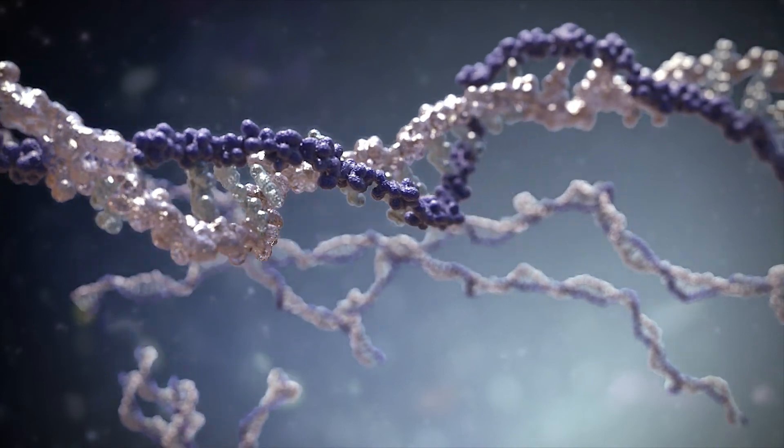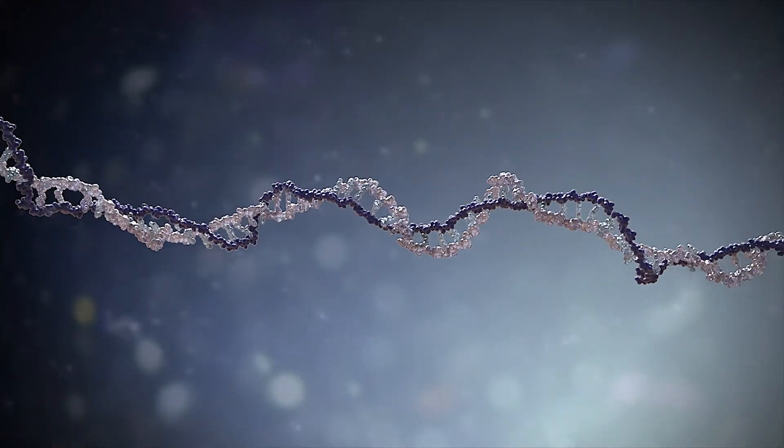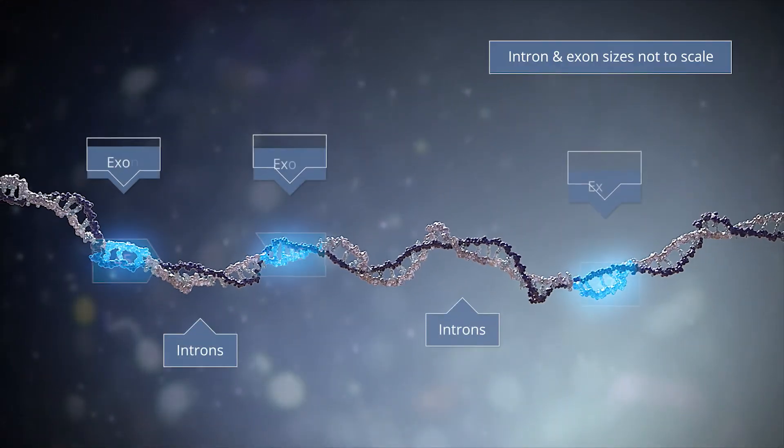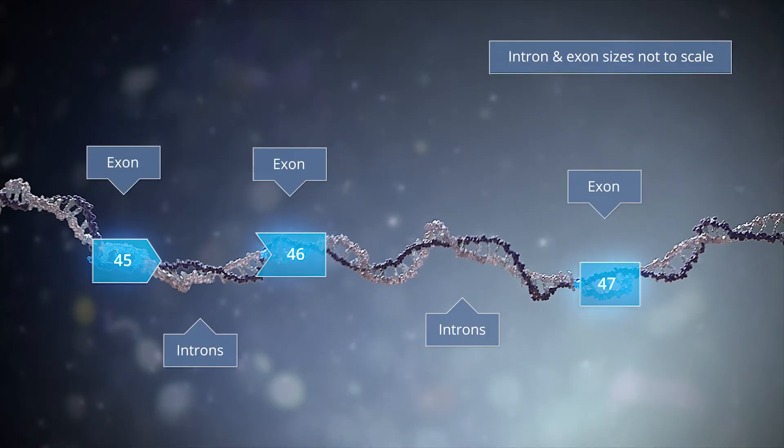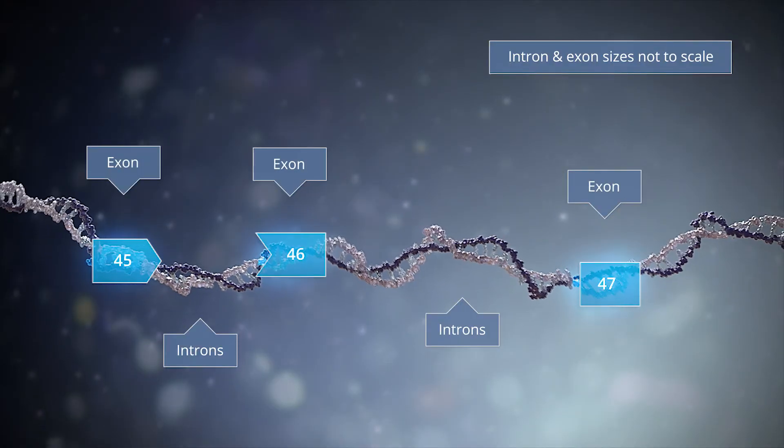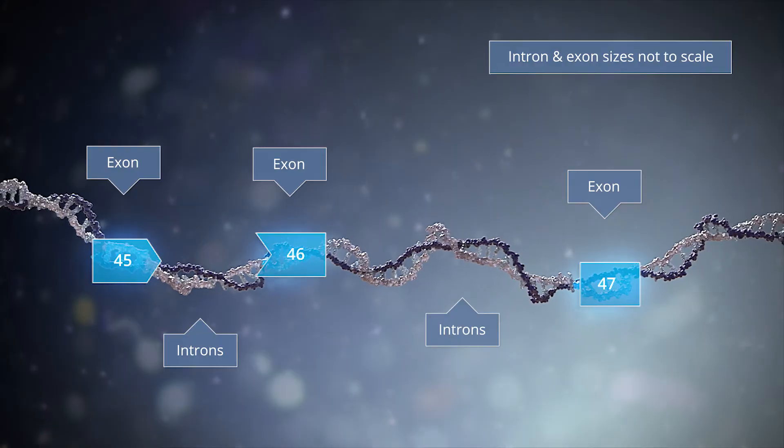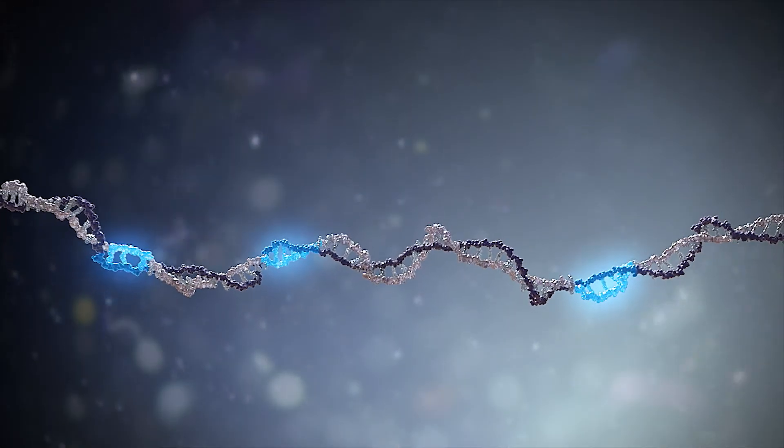The dystrophin gene is one of the longest human genes, spanning approximately 2.5 million bases. It is comprised of 79 different protein coding segments, termed exons, which are interspersed amongst introns.